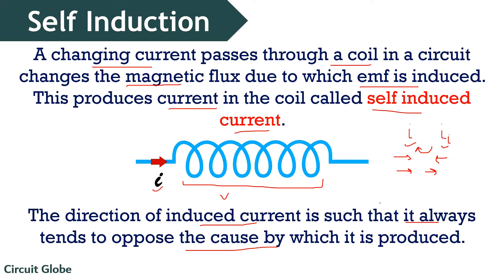We have already mentioned that the direction of induced current will oppose the cause which has produced it. Increasing current has produced the induced current, so it opposes it in that way. And in the next case, the decreasing current has produced the induced current, so it opposes the decaying nature of the actual current. The reason it is given the name self-induction is that the induced current is generated in the same coil where the changing current was flowing. So we can conclude that if current increases, the magnetic field associated with it also increases, flux linkage also increases, and according to Faraday's law, this gives rise to induced EMF and induced current, which will decrease the primary current due to Lenz's law.